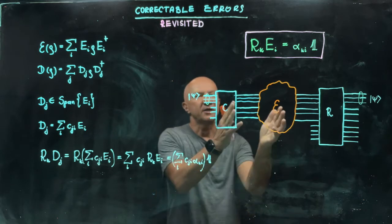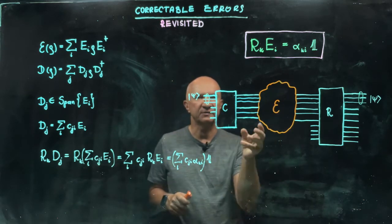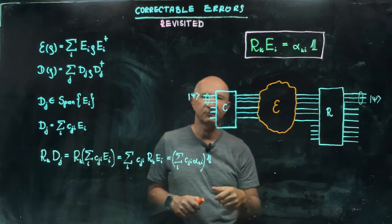Meaning, if I change this map, do you have to go back to the drawing board and design new encoding and new recovery channel?